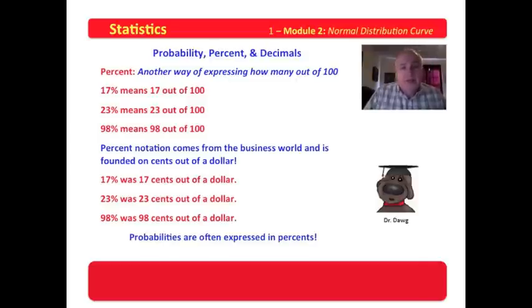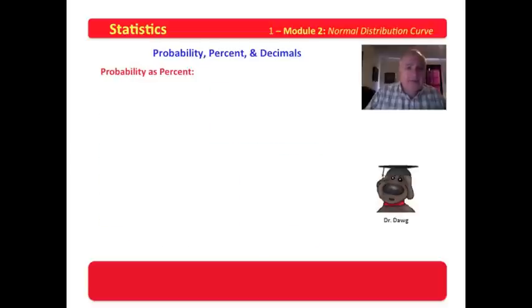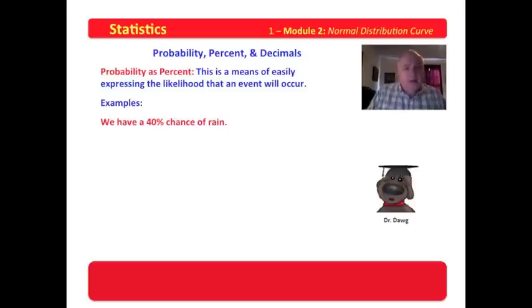Probabilities are often expressed in percents. Since we have taken probabilities and we have seen that it is easy to standardize them on times out of 100, then we can also express them as percent. 17% can be seen as seventeen out of 100, which can also be seen as a probability that something will happen seventeen out of 100 times. Now, probability as percent is really cool. This is the means of easily expressing the likelihood that an event will occur. Some examples. We have a 40% chance of rain.